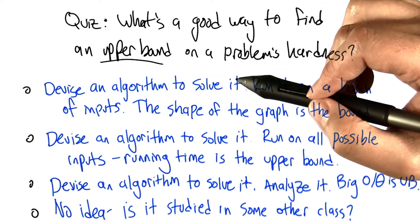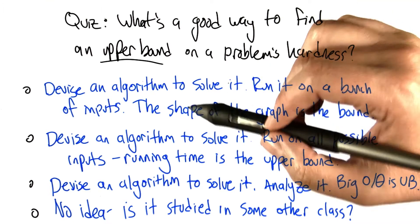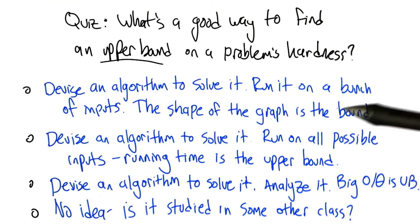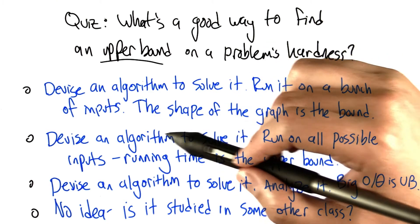One is devise an algorithm to solve the problem, run it on a bunch of inputs, and then look on the graph to see what the shape of it is, and that tells us the bound. So that's one choice.